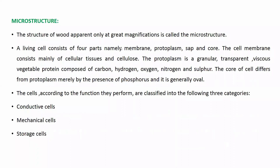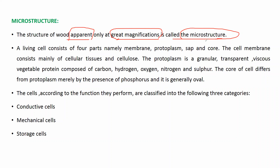Next is microstructure. The structure of wood apparent only under great magnification is called microstructure. It is visible only at great magnification — you have to zoom to a very high level. You need instruments like microscopes to see the microstructure, and only then does it become apparent or visible.